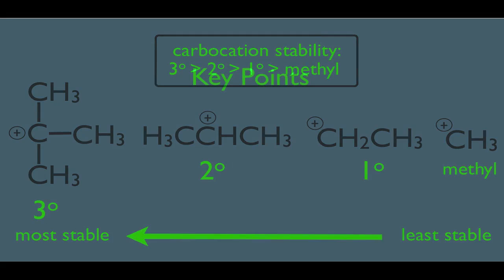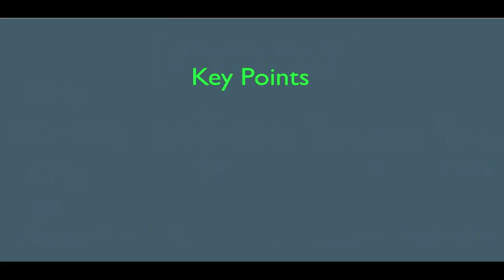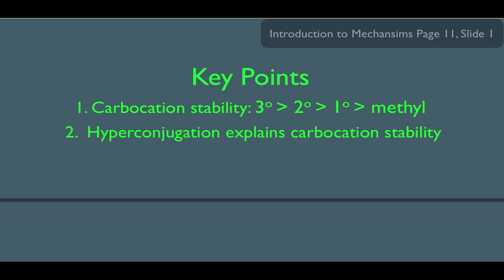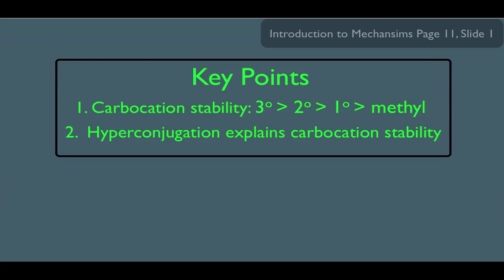So our key points are: first, carbocation stability follows the trend of tertiary being most stable down to methyl being least stable. Second, it is hyperconjugation that explains carbocation stability.